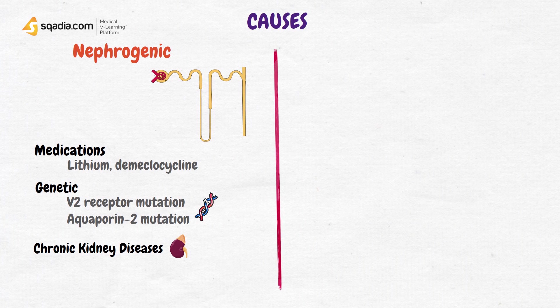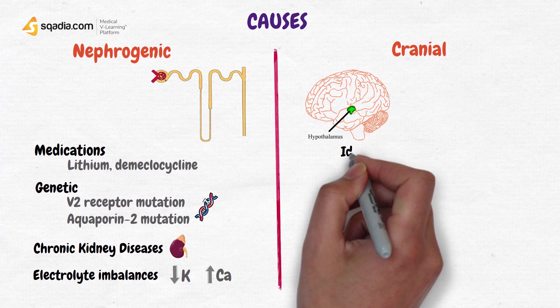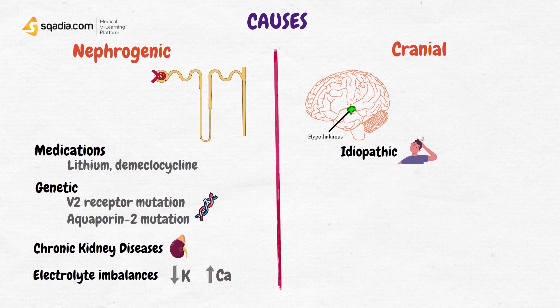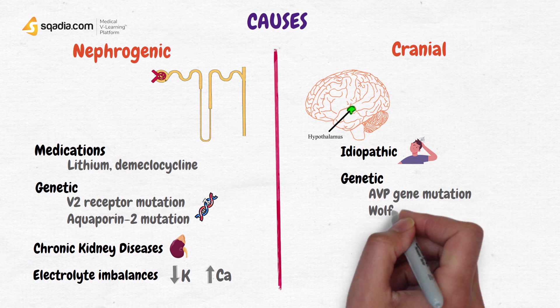and electrolyte imbalances, particularly hypokalemia and hypercalcemia, can also be causes of nephrogenic diabetes insipidus. Cranial diabetes insipidus can be idiopathic, or genetic due to AVPG mutations or Wolfram syndrome.